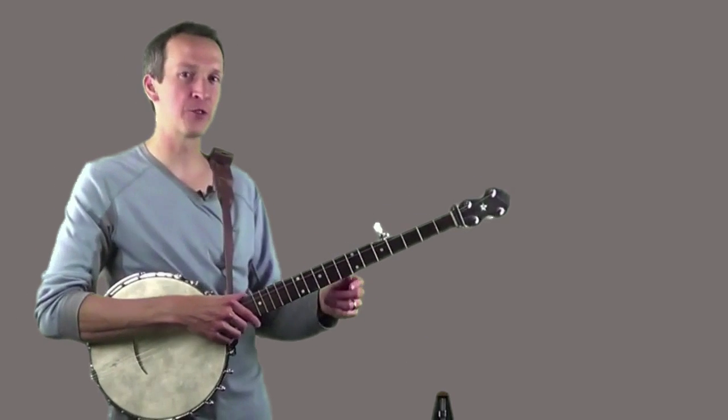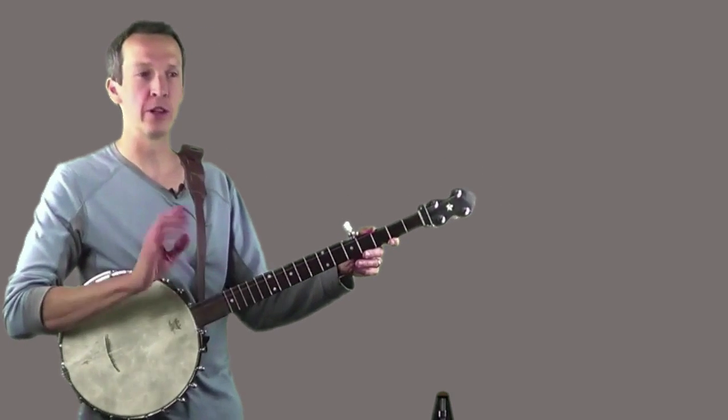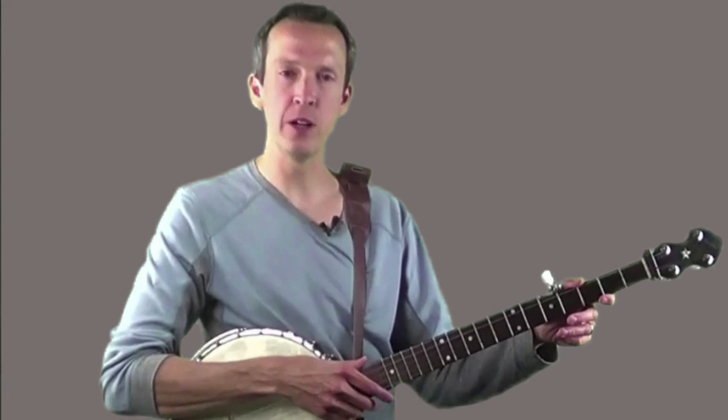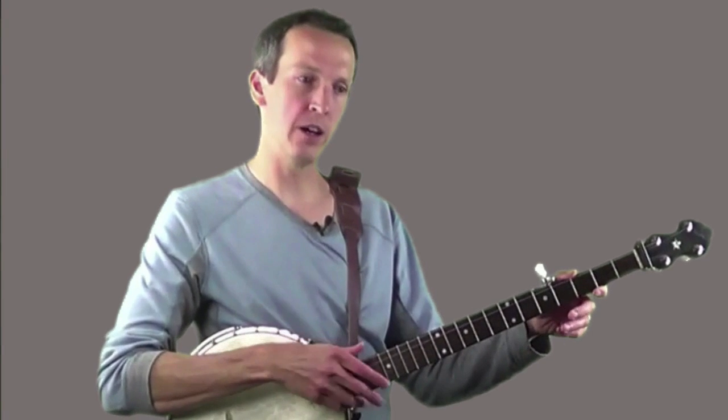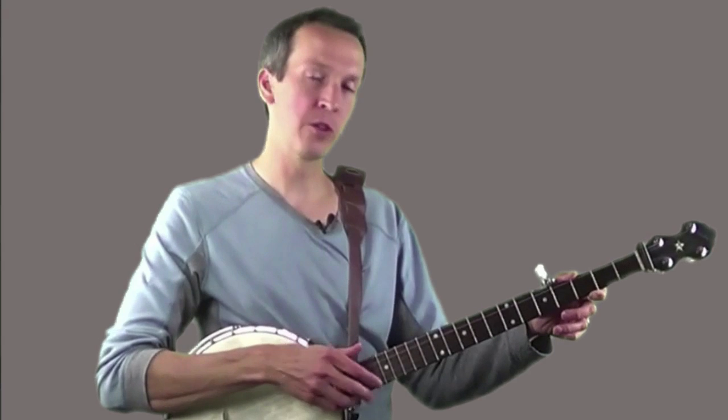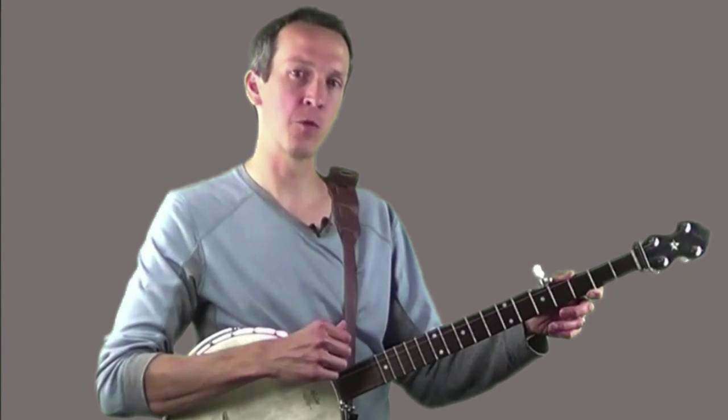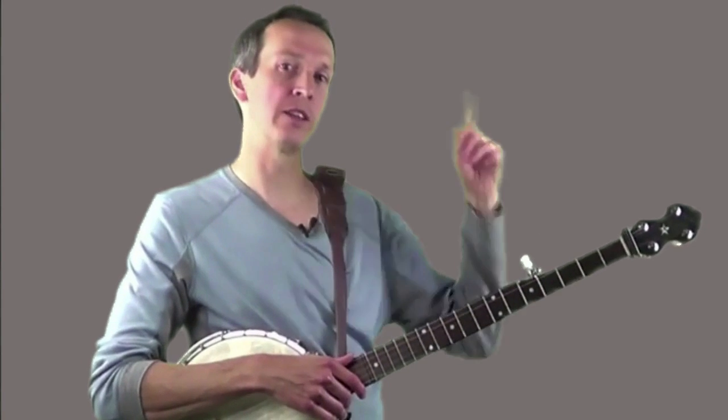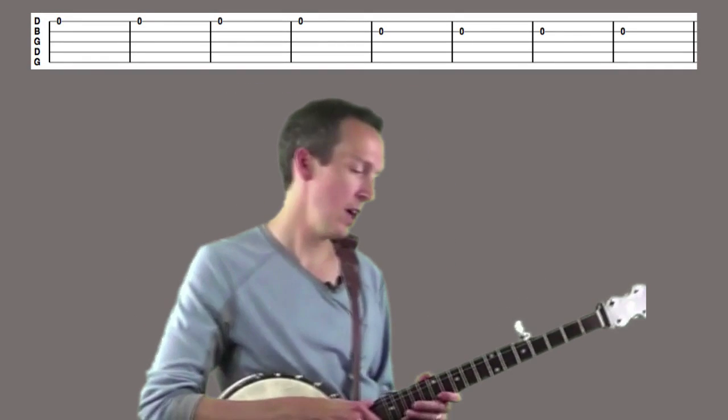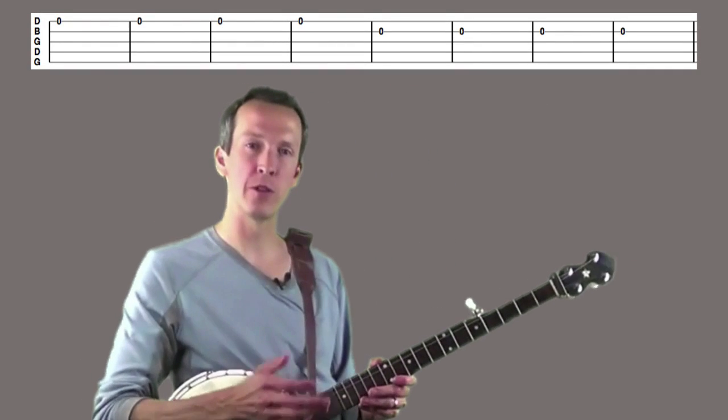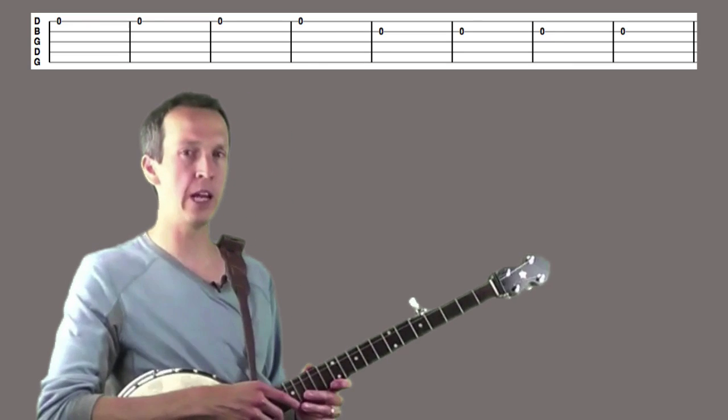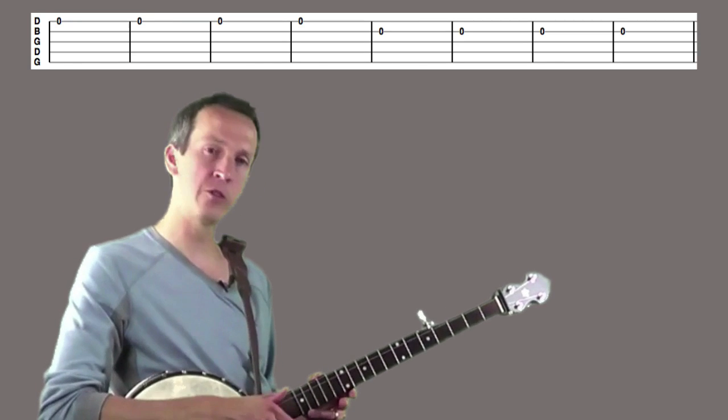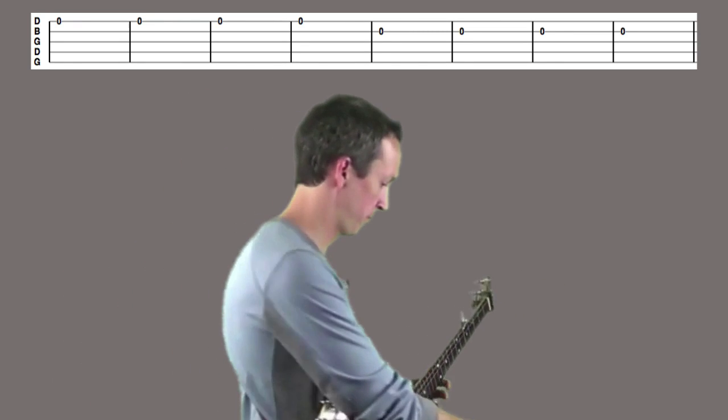Okay, so I've got out the trusty metronome again, and we're going to start with the first exercise. So in this exercise, what I want you to do is we're going to strike each string four times, starting with the first string, progressing up towards the fourth string, and then back down towards the first string. And in tab format, it looks like this. And I'm going to once again start with the lower setting of the metronome. It's set to around 80 beats per minute. And once again, I'm going to play one stroke for every two clicks of the metronome.